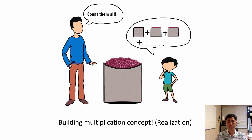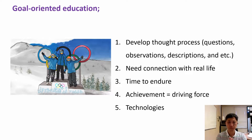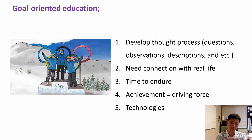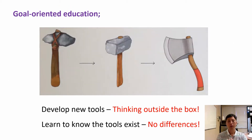If students are able to build concepts this way, their brain really develops and they can utilize knowledge in very different ways. They are also creating new things because it is their creation. So goal-oriented education is developing thought processes to make the brain work. When it is connected with real life it works better, and there are times to endure until you achieve the goal. Achievement is a driving force, and technology evolves in this way.